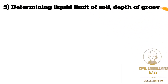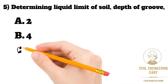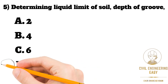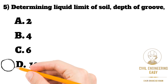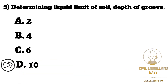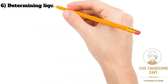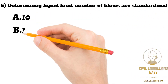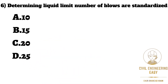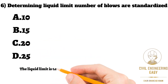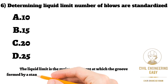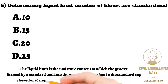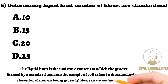In MCQ number five, determine the liquid limit of soil — the depth of groove options are 2 mm, 4 mm, 6 mm, and 10 mm. The depth of the groove cut by the Casagrande tool for determining the liquid limit is 10 mm. The correct option is 10 mm. In MCQ number six, for determining the liquid limit, the number of blows are standardized — options are 10, 15, 20, and 25. The liquid limit is the moisture content at which the groove formed by a standard tool into the sample of soil taken in a standard cup closes for 10 mm on being given 25 blows in a standard manner.